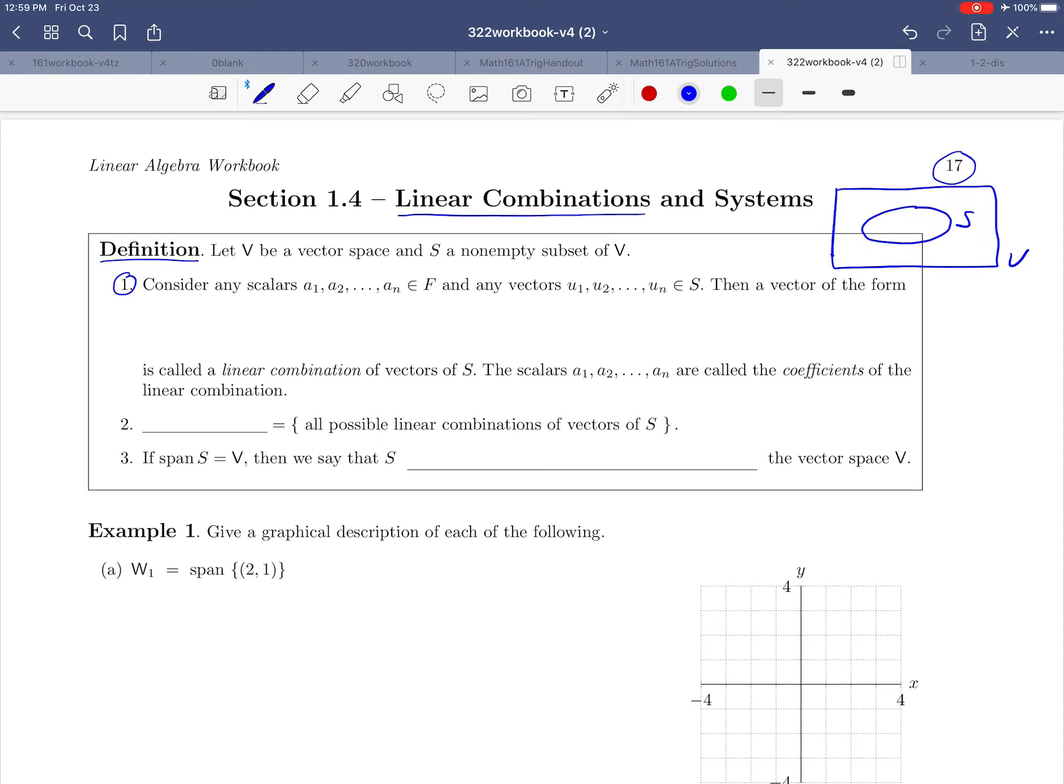And here's how our definition starts out. Suppose that we consider any scalars a1 through aN that live in our field and any vectors u1 through uN that live in this bag of vectors S. And what we'd like to talk about is a vector of the following form. Let's just write this out together. So V is going to look like a1u1 plus a2u2 and so on up to aNuN. And notice that we're just taking the scalars over here and multiplying by the vectors and adding them up.